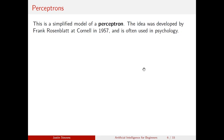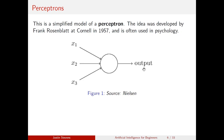This is a simplified model of what's known as a perceptron. This idea was first developed by Frank Rosenblatt at Cornell in 1957, and it's often used in psychology. We have three inputs x1, x2, and x3, each with associated weights, producing an output.